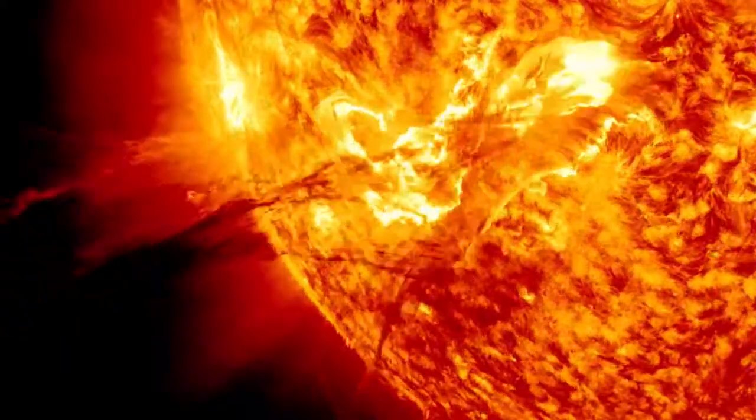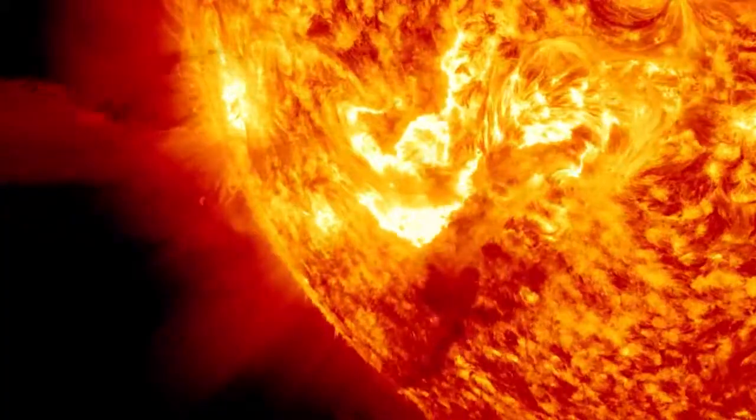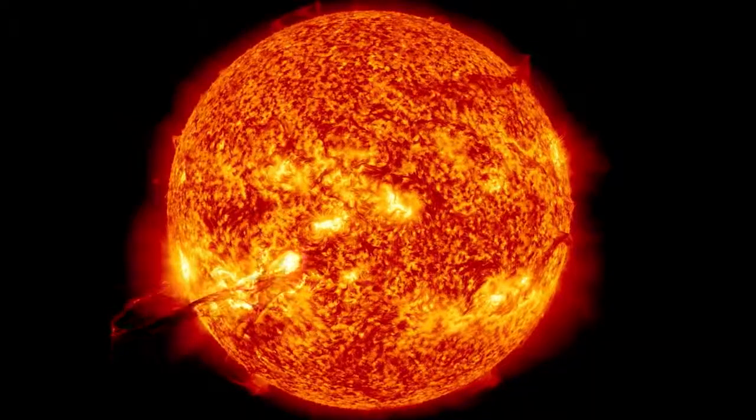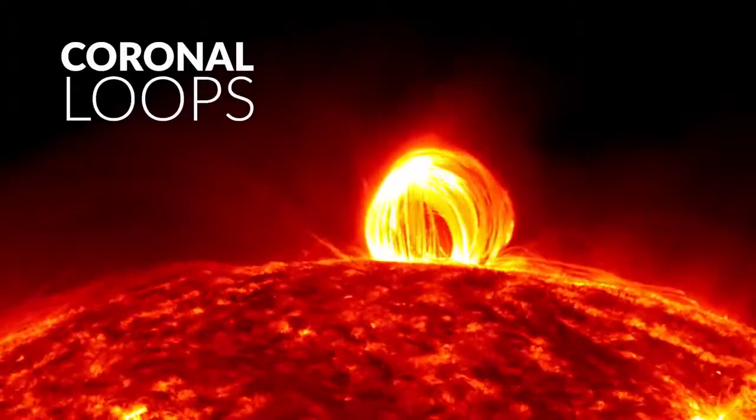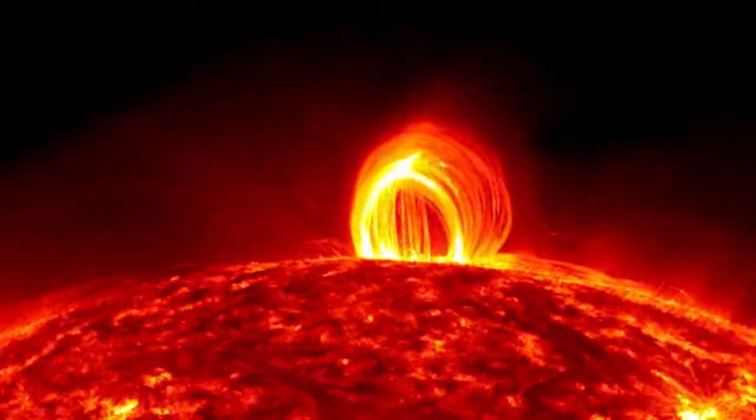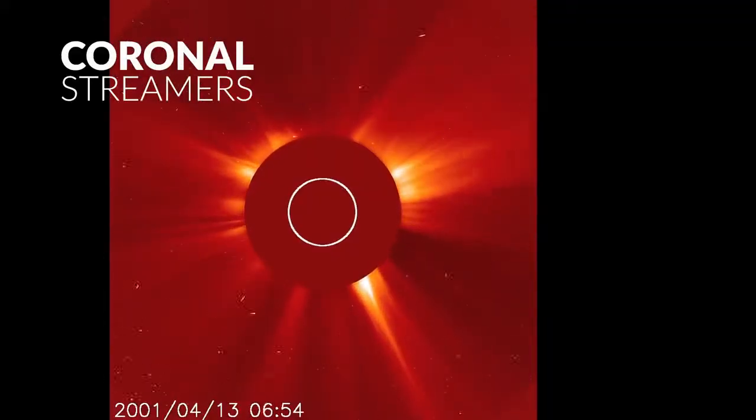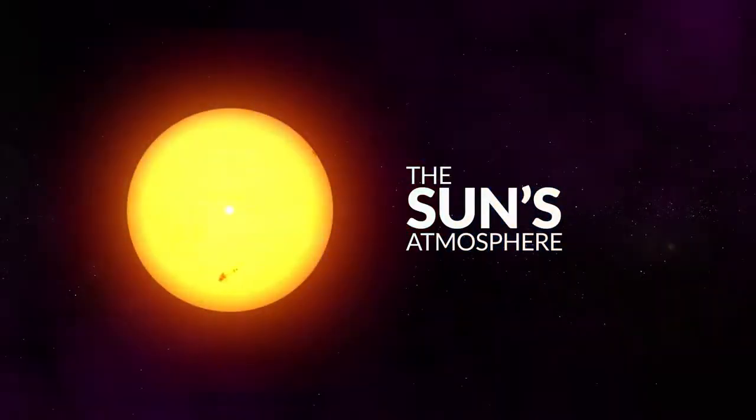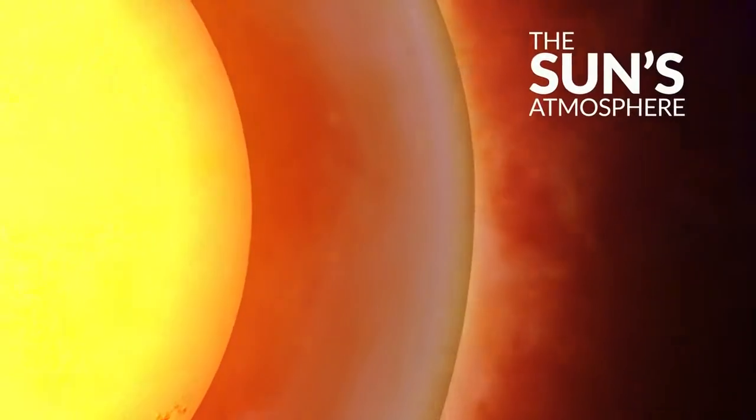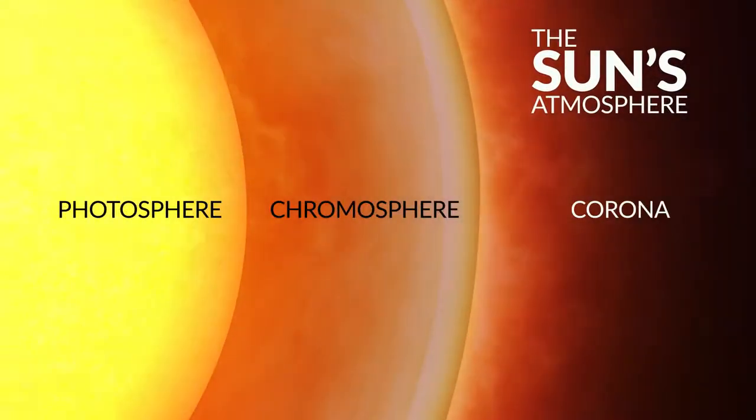Outbursts of hot, gaseous material can occur from the magnetically disturbed sunspot regions, extending thousands of miles above the surface, forming prominences and filaments, coronal loops, coronal streamers, and even coronal mass ejections. These larger, outward-extending features occur above the photosphere in the Sun's less dense upper atmosphere.